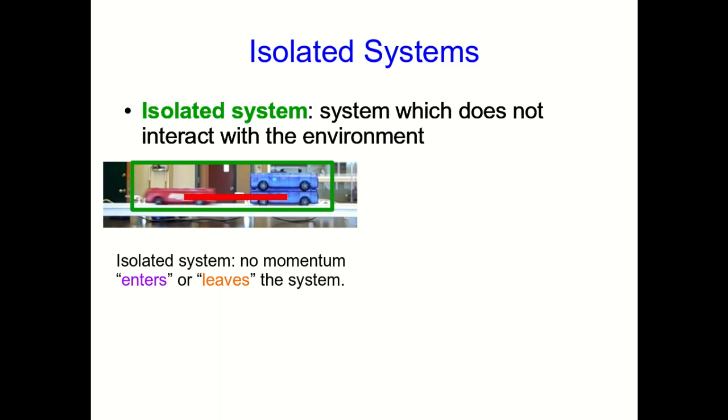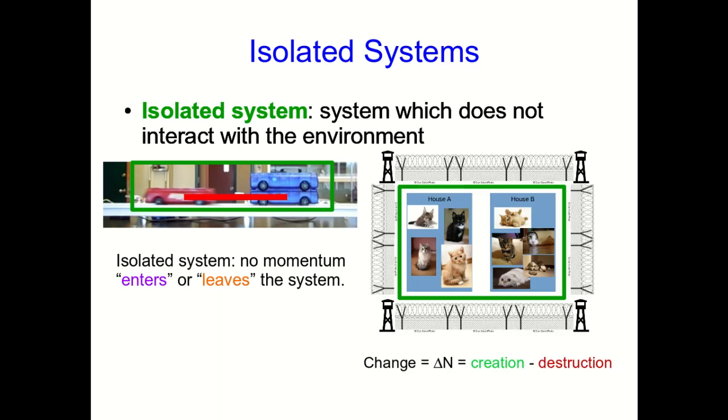But this may remind you of something we saw a couple of lectures ago. It's like our houses full of cats where we've made sure that the cats can't enter or leave. And so since momentum is an extensive quantity, that means it's going to follow the same sort of rule as the cats in the house with the fence around it. In other words, that the momentum will only change because of creation or destruction, not because of input or output. Well, that raises the question, which we'll eventually get to, of whether momentum can be created or destroyed.